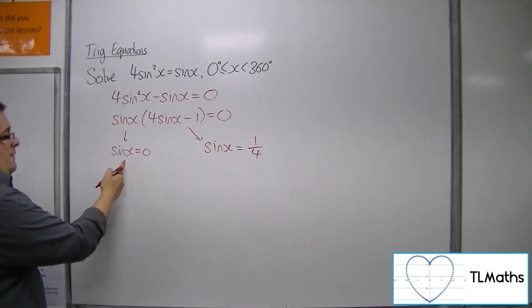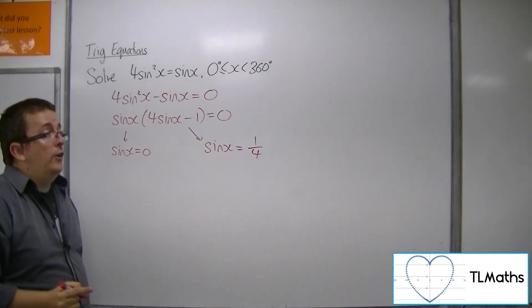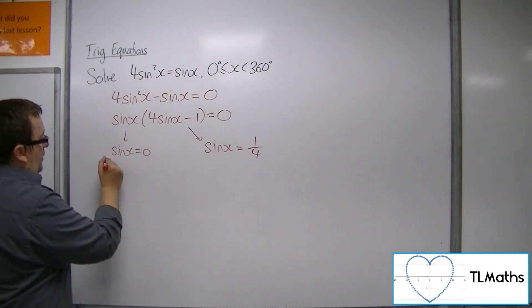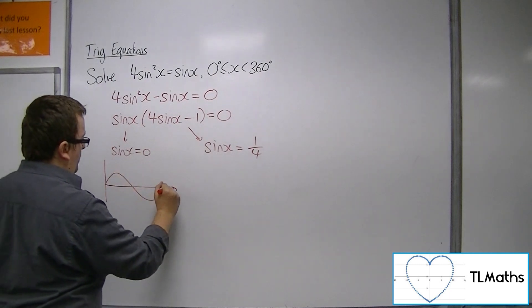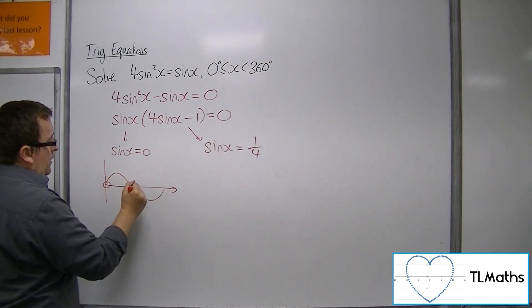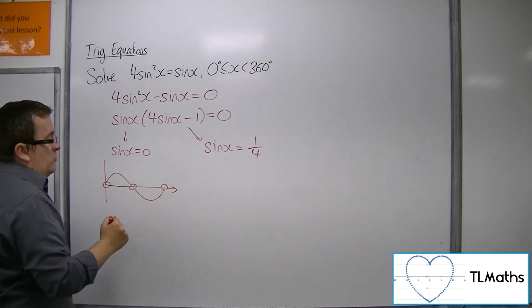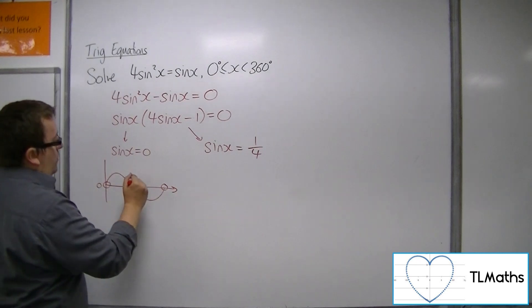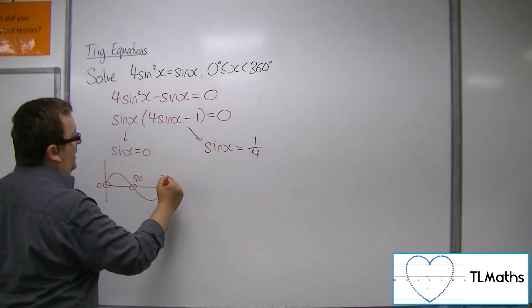So we have two equations that we need to solve between 0 and 360. So sinx looks like that. So sinx equals 0 has three solutions on the graph that I've drawn. But looking at it, there's 0, there's 180, there's 360.